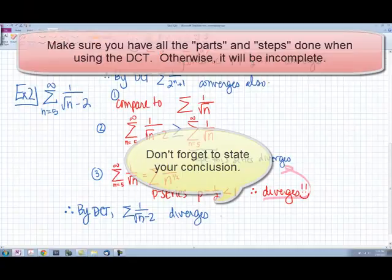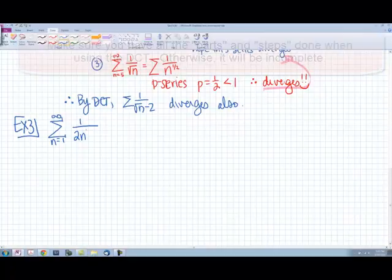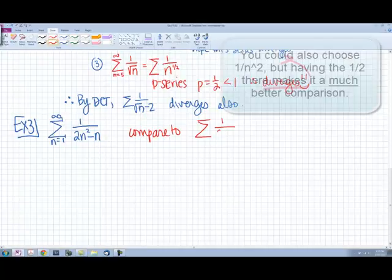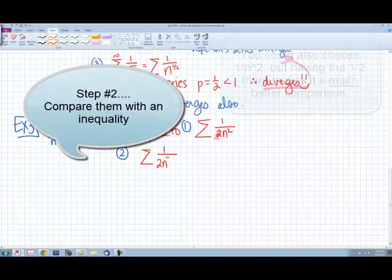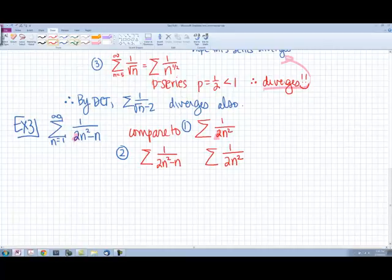So let's try one more before we move on to our next test. 1 over 2n squared minus n. Let's compare this to 1 over 2n squared. So let's compare them. 1 over 2n squared minus n and our other series, 1 over 2n squared. Again, our denominator is getting smaller, so our fraction is getting bigger. So we have this inequality. And on the right-hand side for this series, we are going to hope this series diverges.